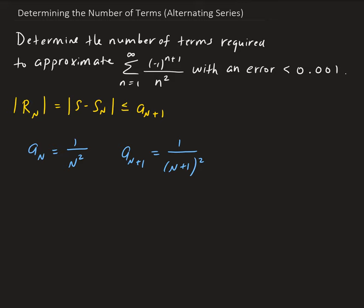We want to bound this with the error. We want to find n such that this is less than the error that we're given. So we can go ahead and solve this: 1 over (n+1) squared.